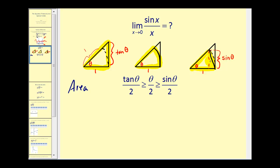Lastly, on the small triangle, this point is on the unit circle, so the y-coordinate would be equal to sine theta. So the area would be one-half times one times sine theta, or sine theta divided by two.